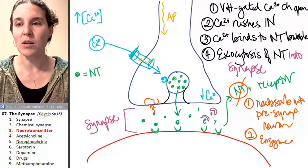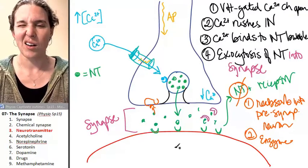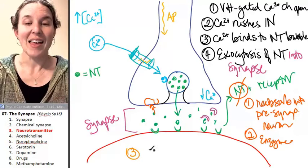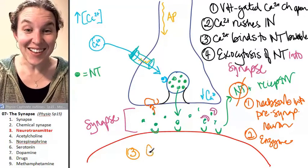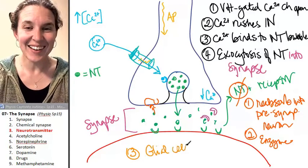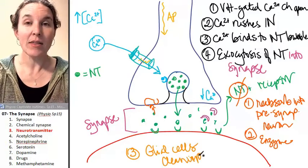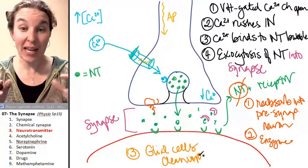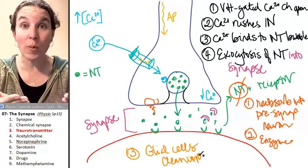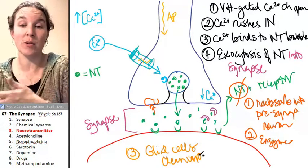There's one more. The glial cells can actually clean up. The astrocytes, the microglia - they can actually come along and help remove neurotransmitter from the synapse.